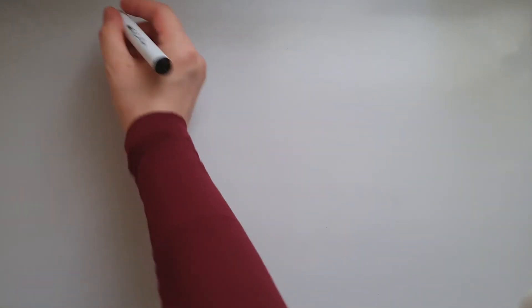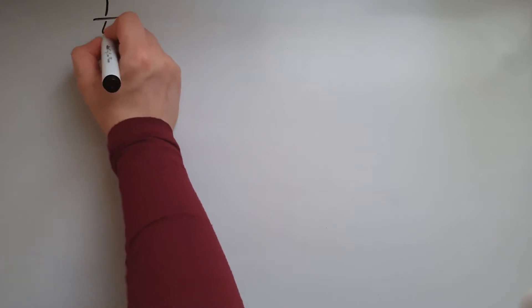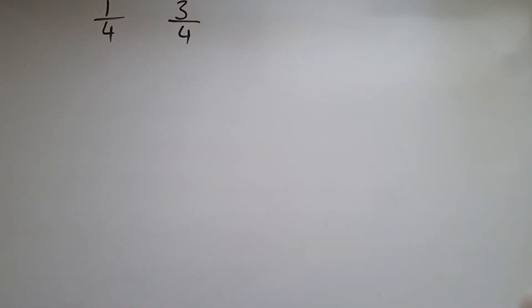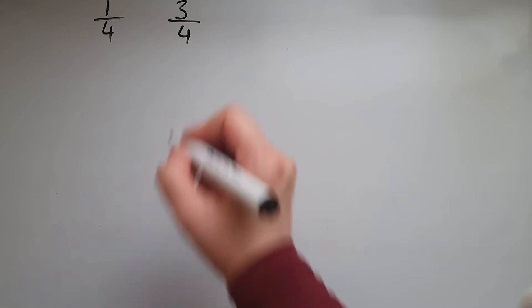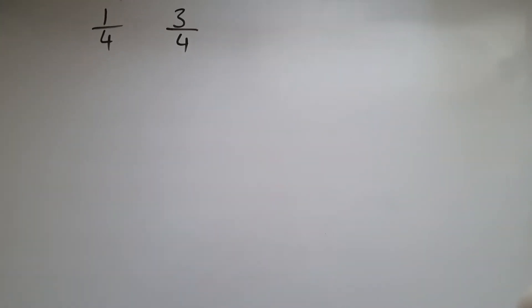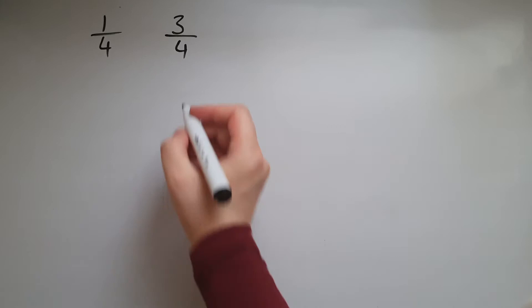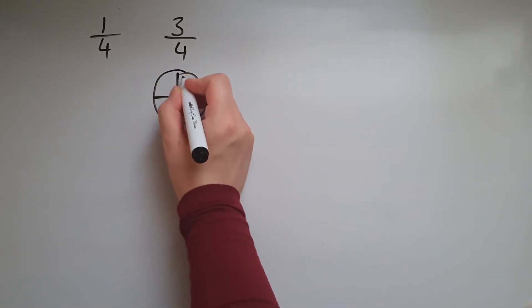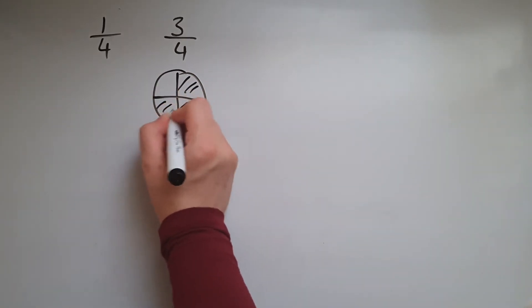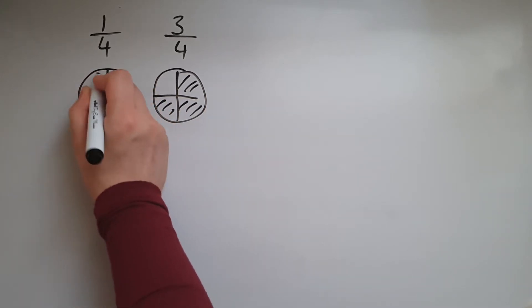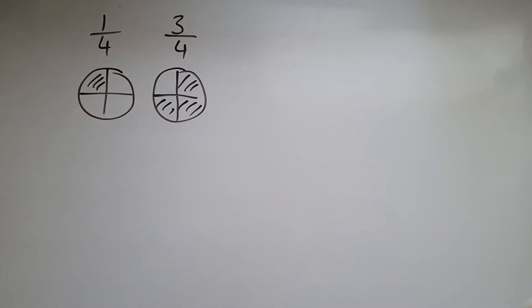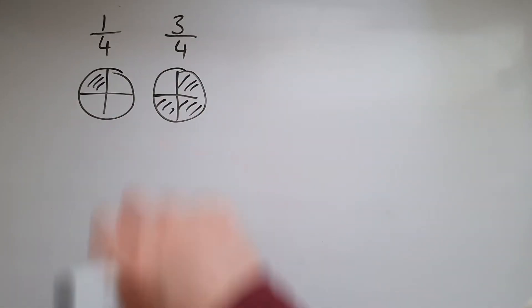When we have fractions which are quite simple and straightforward, and they have the same bottom number — the same denominator — that is a bit more straightforward. If I have 1 quarter and 3 quarters, it's very clear that 3 quarters is larger than 1 quarter. Same slices, we're just taking more slices in this case.